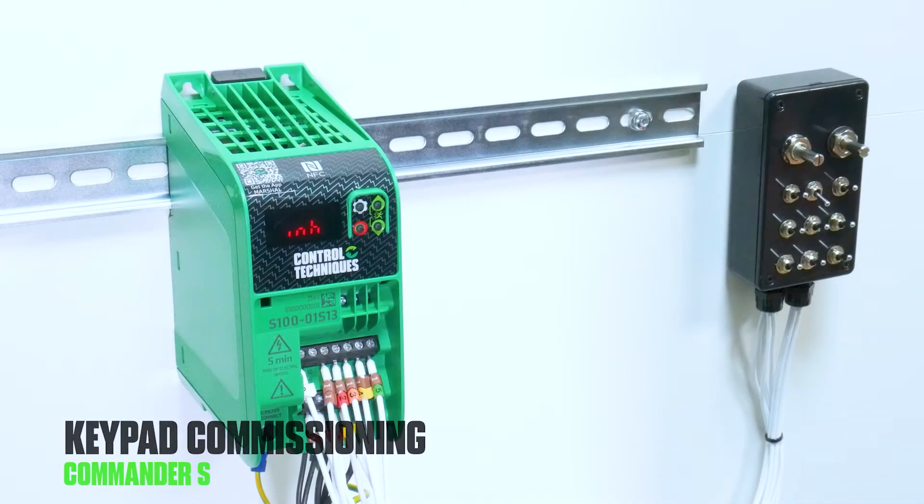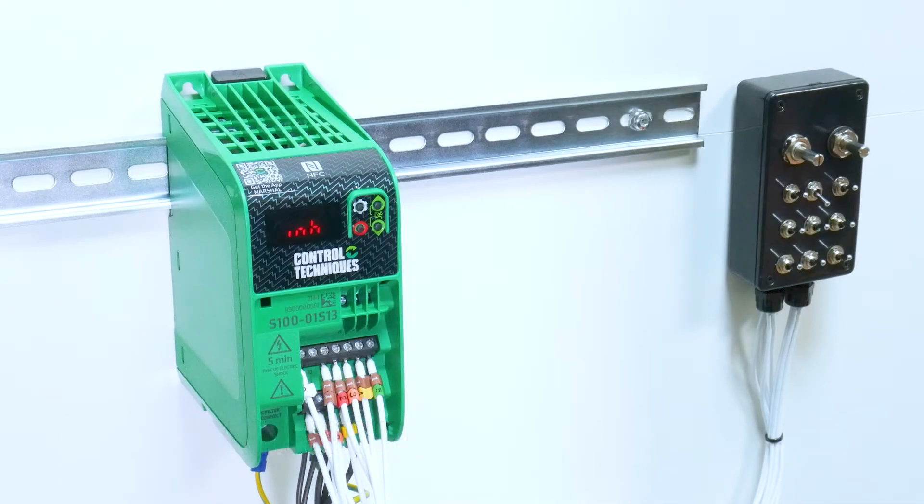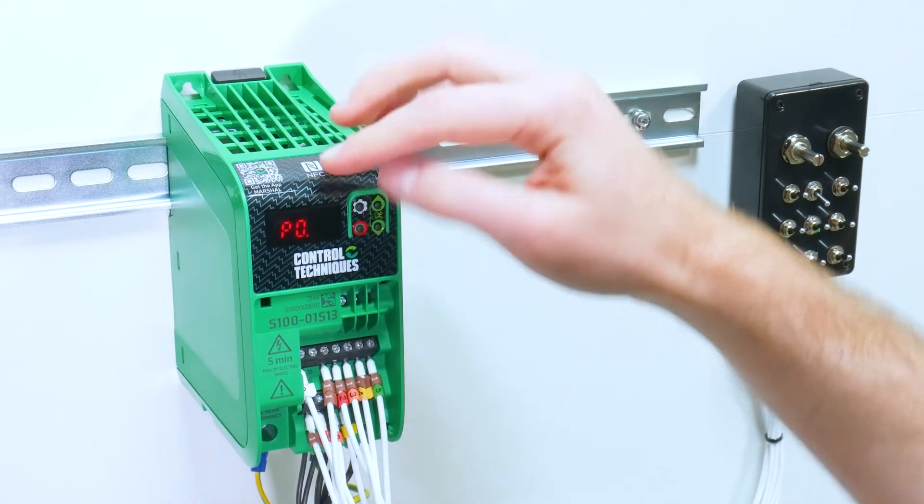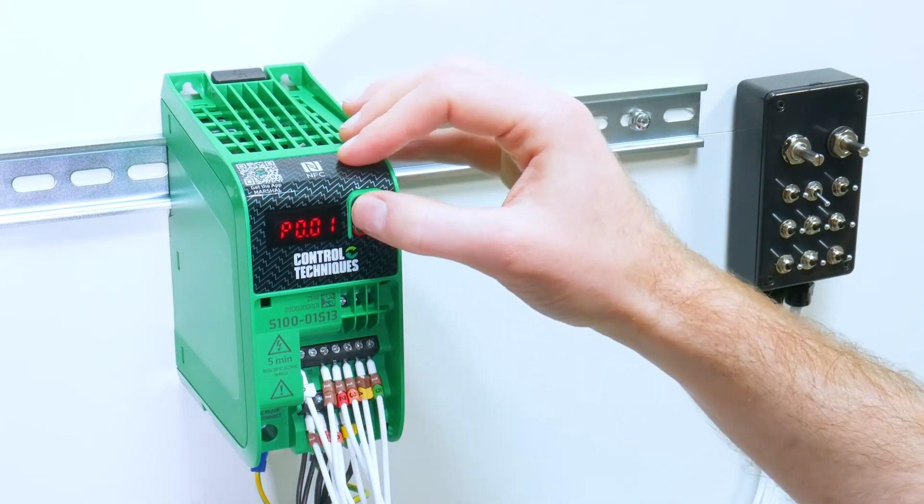When powered up, the drive will display INH which is for inhibit. Pressing the settings key will go into the parameters, and parameter 1 is our minimum frequency limit.